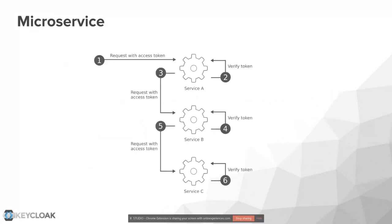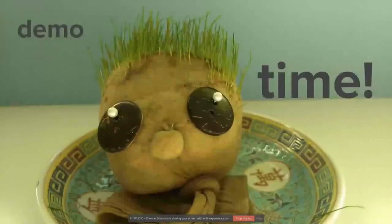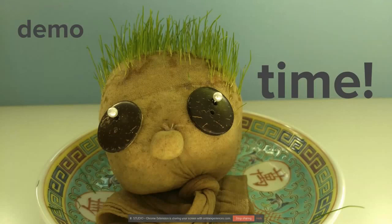In a microservices architecture, one service can invoke another service, and so on, by simply passing the same access token along each time. This provides full end-to-end authentication throughout all your services and applications involved in handling a particular request.